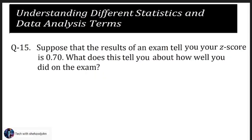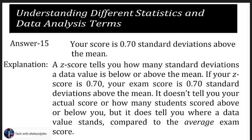Question 15: Suppose that the result of an exam tells you your z-score is 0.70. What does this tell you about how well you did on the exam? Answer: the score is 0.7 standard deviations above the mean.